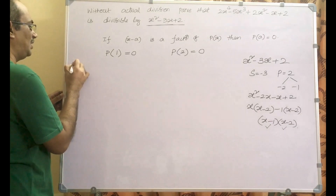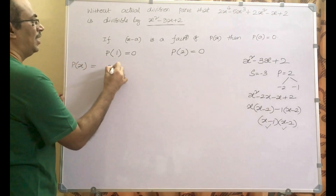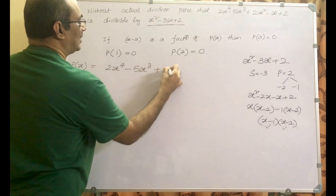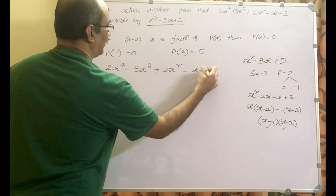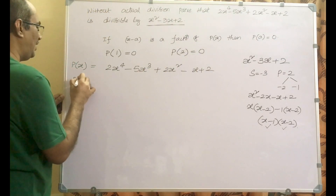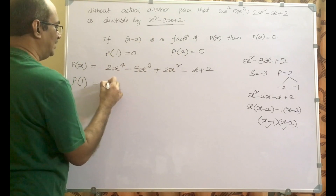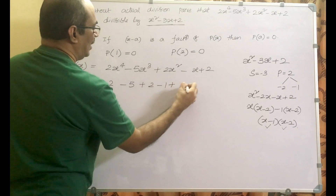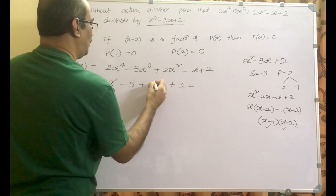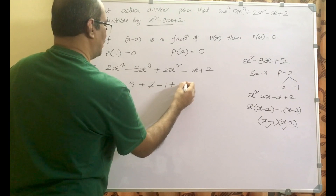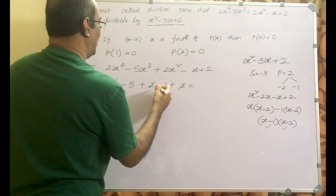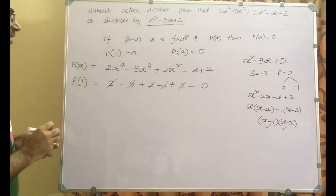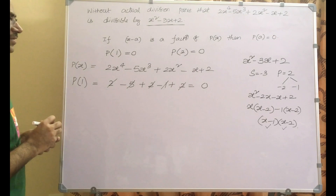Let us find p of 1. Our polynomial p of x equals 2x to the power of 4 minus 5x cube plus 2x square minus x plus 2. Now p of 1 is easy — I just take the coefficients: 2 minus 5 plus 2 minus 1 plus 2. Simplifying: 2 plus 2 is 4, plus 2 is 6, minus 1 is 5, minus 5 is 0. So p of 1 equals 0.